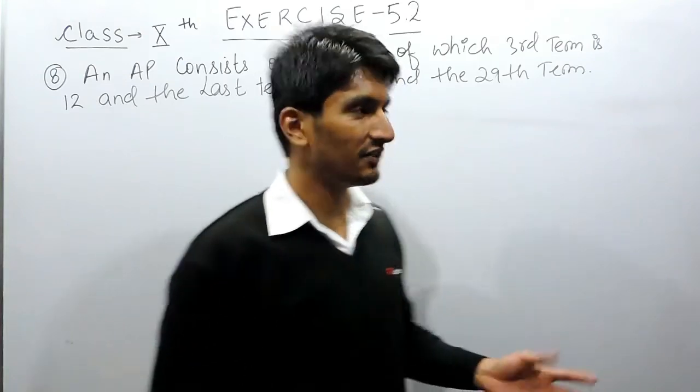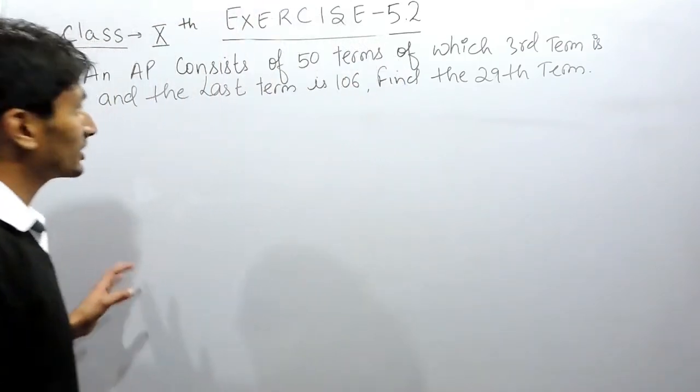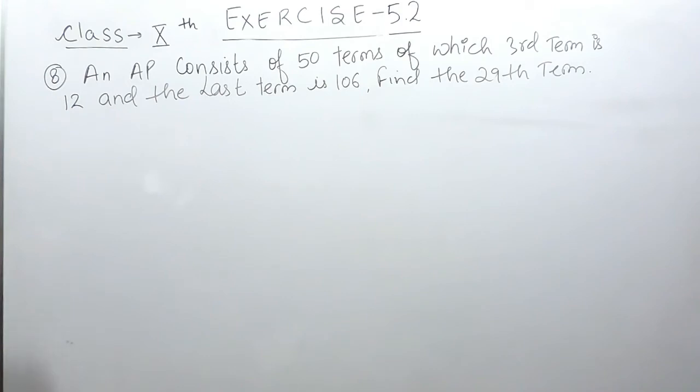Hello everyone, in this video we are going to solve question number 8 of exercise 5.2. The question says an AP consists of 50 terms of which the third term is 12 and the last term is 106. You have to find the 29th term of that AP.